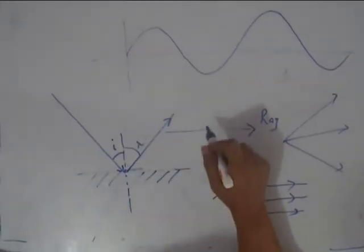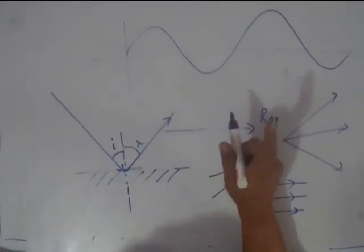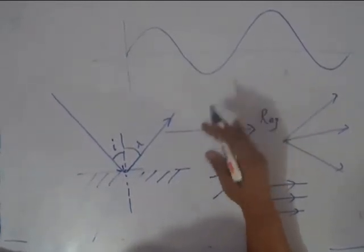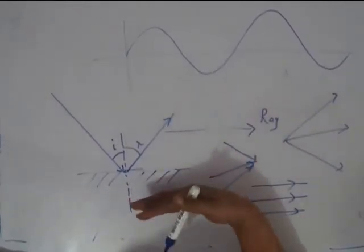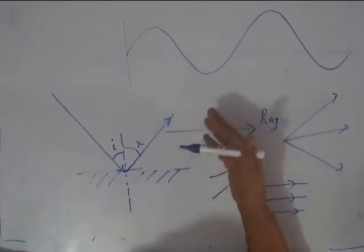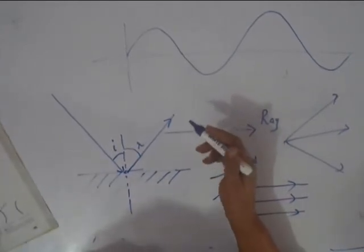These laws are very important and first thing that you have to remember is that they are always valid. They are always followed. Whatever reflection you are talking about, whether it is from plane mirror or from any other kind of mirror, these laws will always be followed. So that we should keep it in mind.